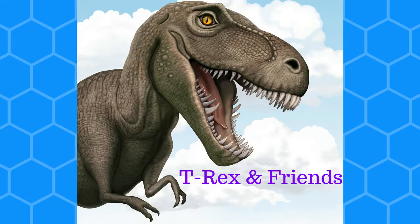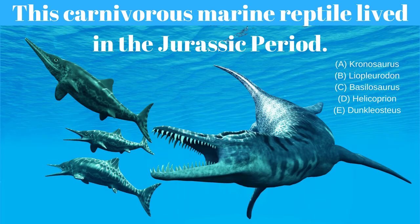Question 2. This carnivorous marine reptile lived in the Jurassic period. A. Kronosaurus, B. Liopleurodon, C. Basilosaurus, D. Helicoprion, E. Dunkleosteus.